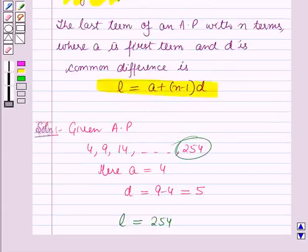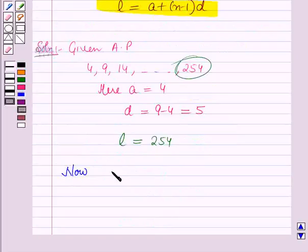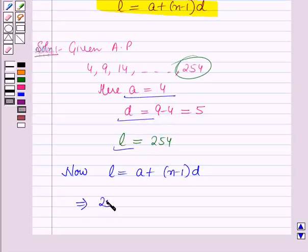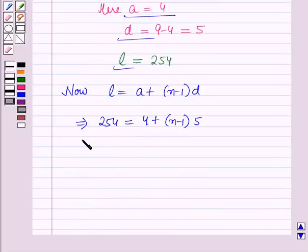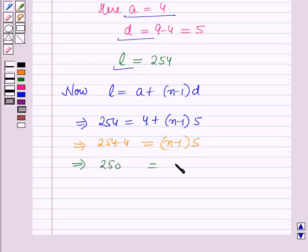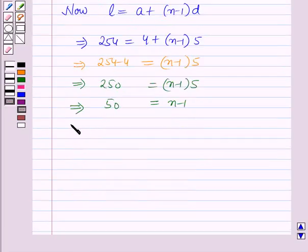So using this formula from the key idea, l equals A plus (n minus 1) times D. Putting the values, 254 equals 4 plus (n minus 1) times 5. This implies 254 minus 4 equals (n minus 1) times 5, which further implies 250 equals (n minus 1) times 5. Dividing both sides by 5 gives 50 equals n minus 1. This implies 50 plus 1 equals n, so n equals 51.